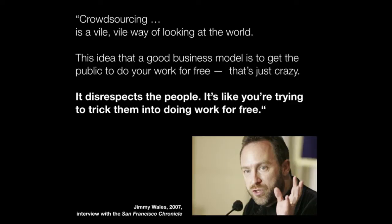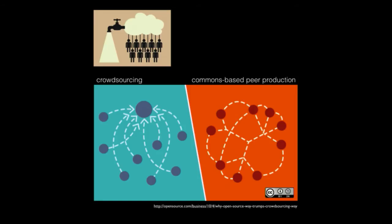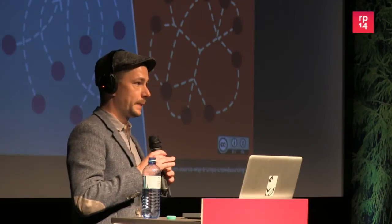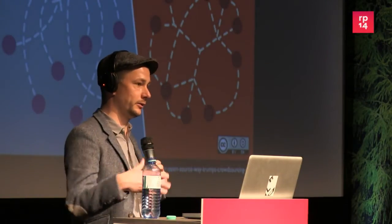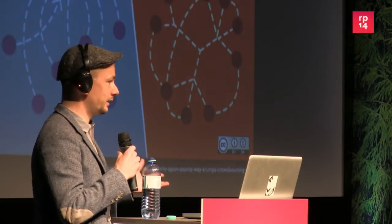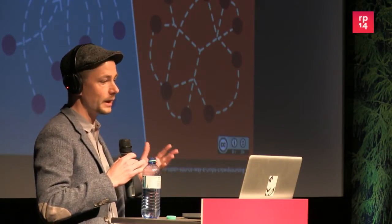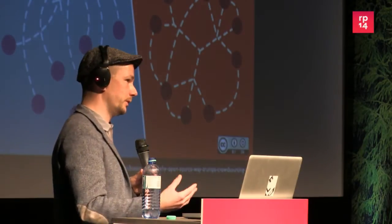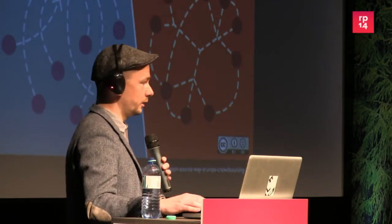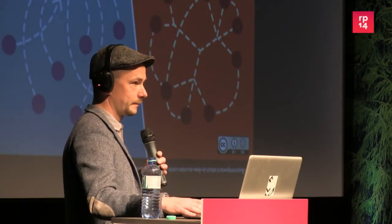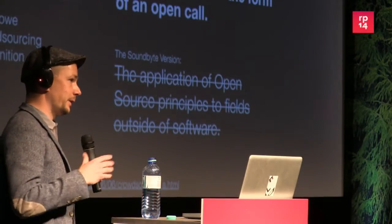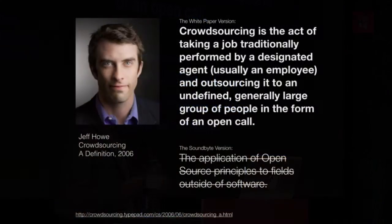That might be surprising coming from Wales, but the important difference between something like Wikipedia — where people also work for free — and the typical crowdsourcing model is that on Wikipedia people help each other and what they produce is beneficial for many more people than those doing the production. In crowdsourcing, the results are privatized and usually only beneficial for those running the crowdsourcing process. It's essentially an extraction of knowledge, content, and labor.